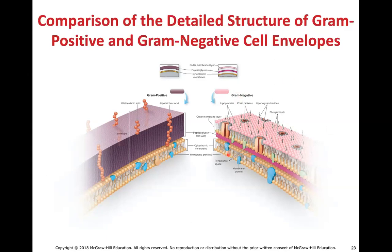The gram-negative cell turns pink because we use a counter stain called Safranin, which binds to the polar heads of the outer membrane — providing contrast so you can see the cells. So gram-positive cells have just the cell membrane and cell wall, while gram-negative cells have the cell membrane, cell wall, and an additional third layer — the outer membrane.